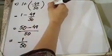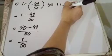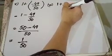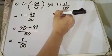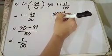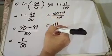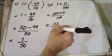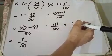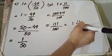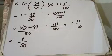इसी तरह छठा part: 1 plus 11 over 100. 100 को 1 से multiply करेंगे, तो 100 plus 11 over 100 आएगा। Answer है 111 over 100, जिसे denominator में divide करने पर mixed number में 1 and 11 over 100 आएगा। यह mixed number में इसका answer है।